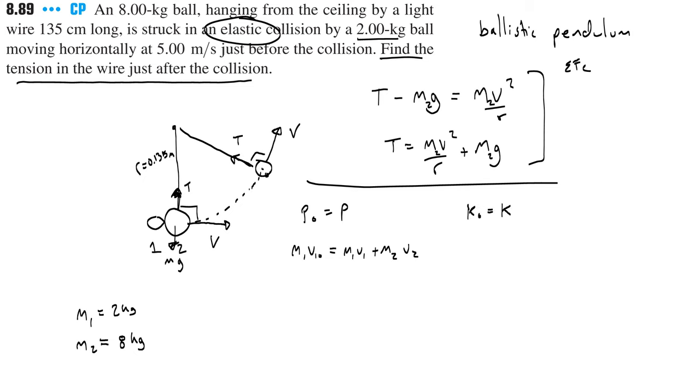So what you need to do is take advantage of the fact that it's elastic, and therefore the kinetic energy is conserved. Instead of writing out the kinetic energy equations, we're going to jump to our shortcut where we know that v1 plus v1 not equals v2 plus v2 not, where thankfully v2 not is zero. Now ideally what we want to do is find v2.